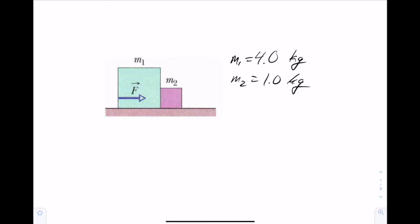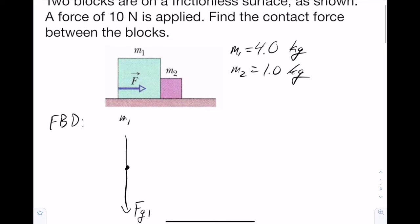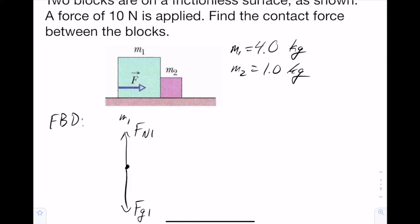The first thing that we should do is draw the free body diagrams for both. We'll start with mass 1. We're always going to have gravity. Now we can label this F sub g. We want to make sure that we label that F sub g1 so that we know that it's different from the force of gravity on the other block when we get to it. Then we'll have a normal force pointing up. To the right, we've got the applied force, which was just labeled F. I'll call it F sub p for pushing force. And then we know that because there's the block in front of it, there's also going to be some kind of contact force there. So I'll call that F sub c.